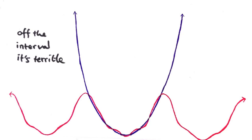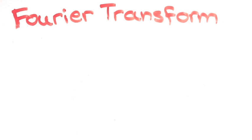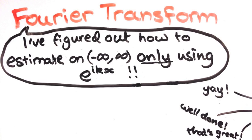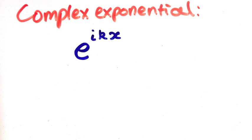That's where the Fourier transform comes in. It comes up with a way to estimate the functions on the whole real line using complex exponentials. Before we talk about how though, let's think about these complex functions e to the power ikx.